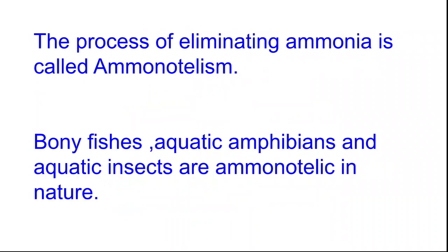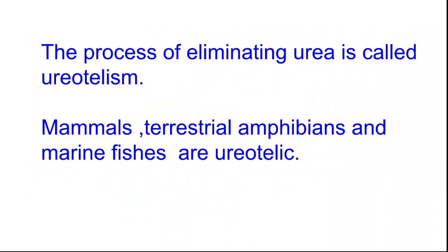The process of eliminating ammonia is called ammonotelism. Bony fishes, aquatic amphibians and aquatic insects are ammonotelic in nature. The process of eliminating urea is called ureotelism. Mammals, terrestrial amphibians and marine fishes are ureotelic.